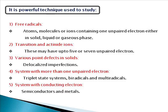ESR spectroscopy is also used to study various point defects in solids and delocalized imperfections. Additionally, systems with more than one unpaired electron — such as triplet states containing two unpaired electrons — can be studied, as well as bi-radicals, multi-radicals, and systems with conducting electrons.